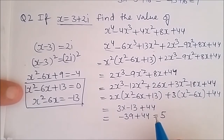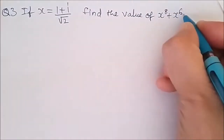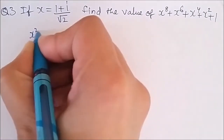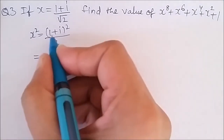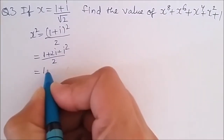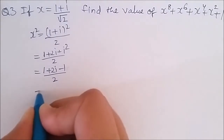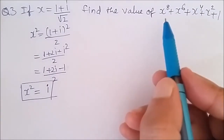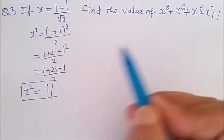Let us see one more example of a complex polynomial equation where we will use a different approach — this is a very important question. By looking at the question it can be seen that if I square both sides I get x square. Squaring: 1 plus iota whole square over root 2 squared equals 1 plus 2 iota plus iota square over 2. Since iota square equals minus 1, the 1 and minus 1 cancel and I am left with iota only. So x square equals iota. Looking at the polynomial, it has x to the power 8, x to the power 6, x to the power 4, and x square — all even powers — so I can easily use this result.